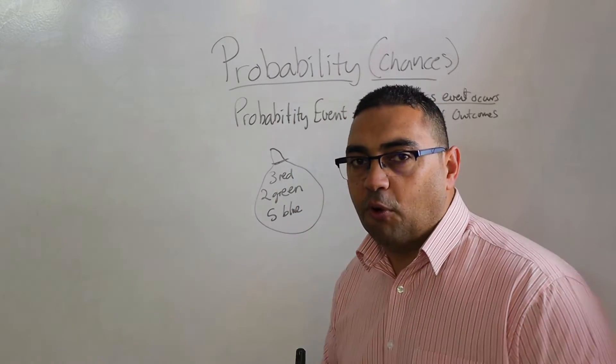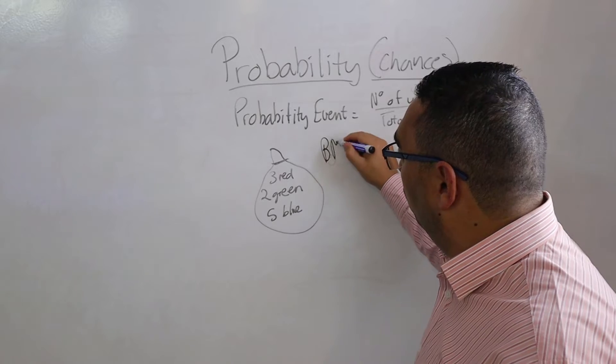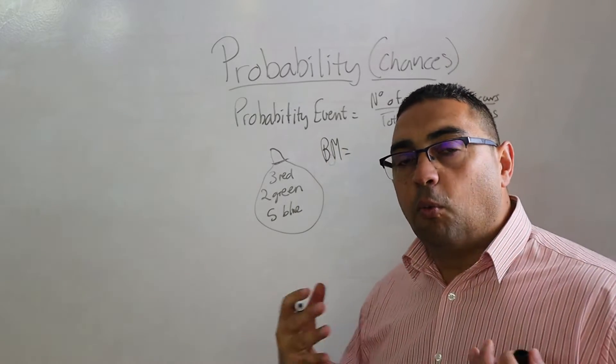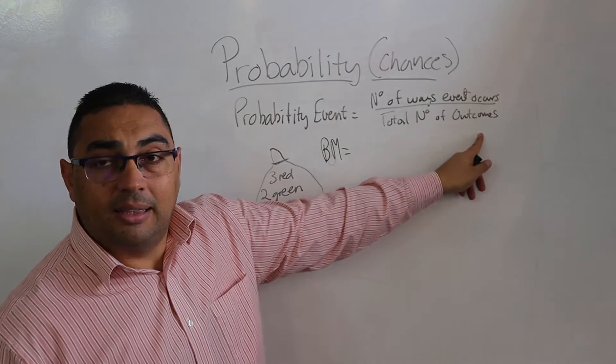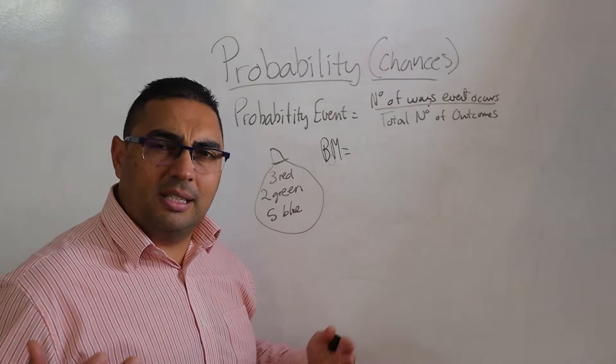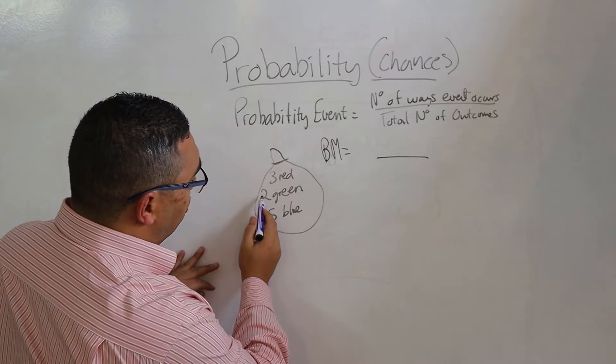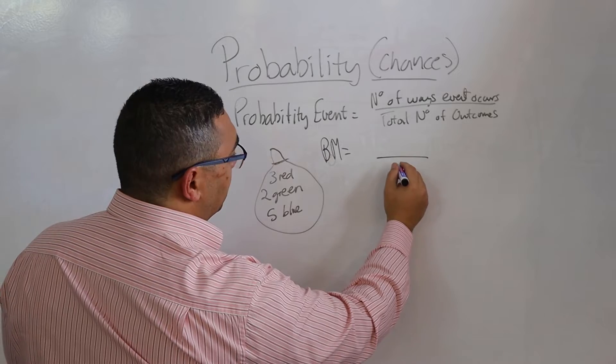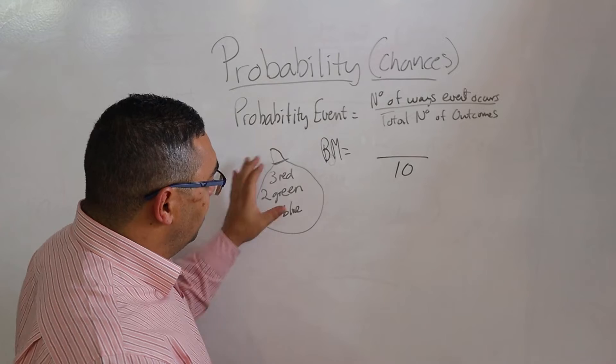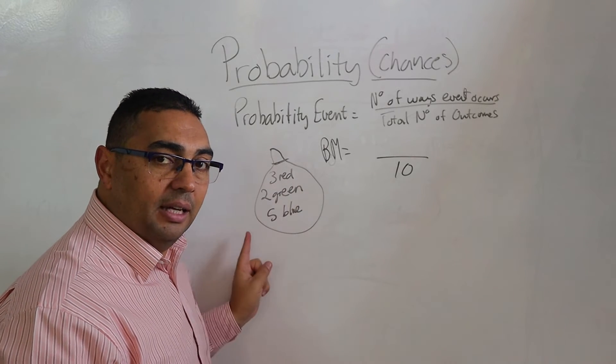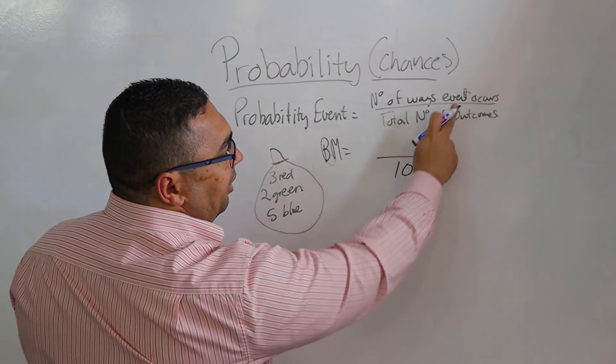So let's use our formula. Our probability event is us getting a blue marble. What are we now going to do? We need to look at, and I first want to look at, the total number of outcomes. In this case I'm looking at the total number of marbles that I have: three, two, that's five, plus five is 10. So when we look at the total number of outcomes, I'm looking at the total that I have here, which in this case is 10.